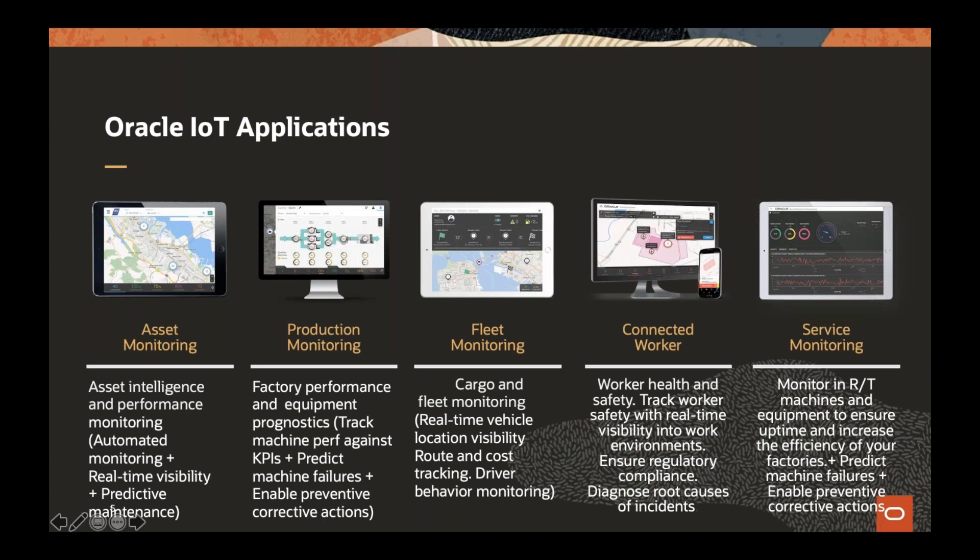We have the following IoT applications in our portfolio: asset monitoring cloud, fleet monitoring, production monitoring, connected worker, and service monitoring. For asset monitoring cloud, you can use Oracle Internet of Things Asset Monitoring Cloud to improve profitability through automated monitoring and alerting of assets, gain real-time visibility into asset health and utilization, and predict future events — tracking real-time location, health, and utilization. You can view assets and analytics on the dashboard and automate actions based on predictive insights.